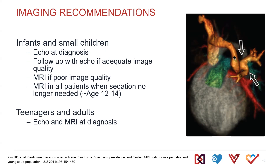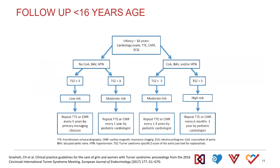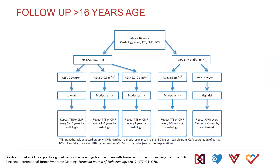For teens and adults, it's usually an echo and MRI at diagnosis. In some cases, if you have beautiful echo images, you can get the echo at the first visit and MRI at the second. If there are any questions or concerns, I would always get both forms of imaging. The frequency of follow-up is based on patient age, aortic size, and other abnormalities, with guidelines covering both younger kids and older individuals for imaging frequency and activity restrictions.